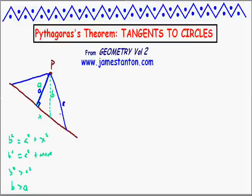Great. So a little application of Pythagoras' theorem is the shortest path from a point to a line is along a perpendicular segment. Great. Now let's get to some circles results.